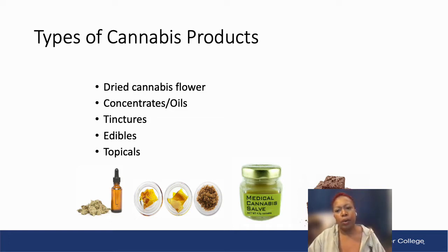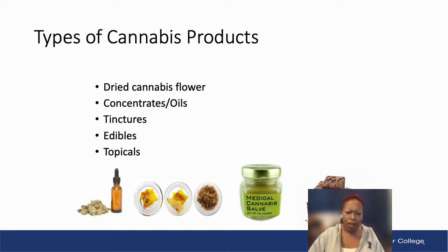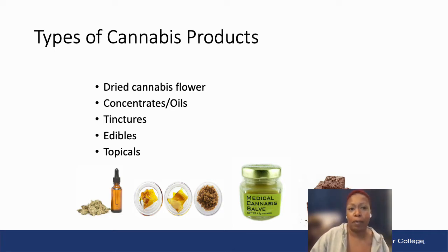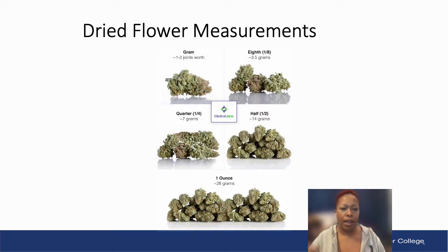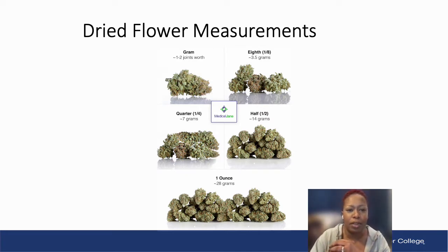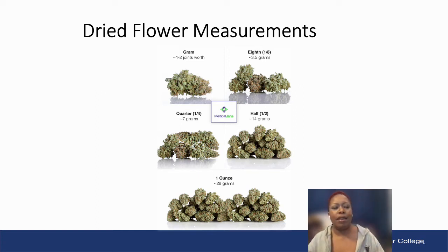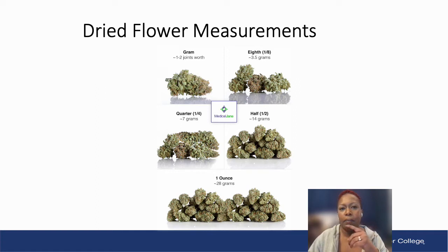We're going to take a look at all those different types — how you use them and what are some of the most common things you're going to see as an employee in a dispensary or in other aspects of the cannabis industry. Before we get into that, let's take a look at how dried flower is typically measured. In a dispensary, cannabis buds or flower are typically packaged and sold in units designated in both metric and standard weight measurements.